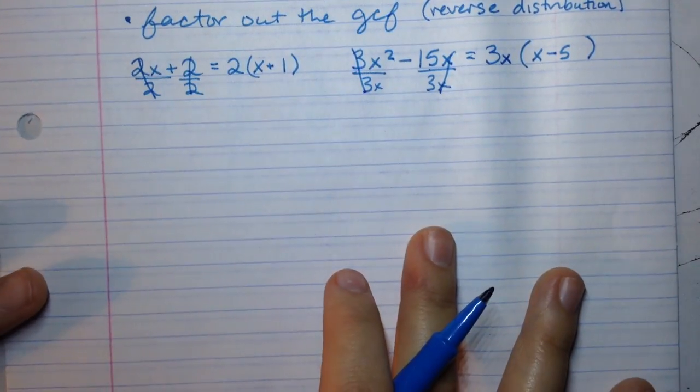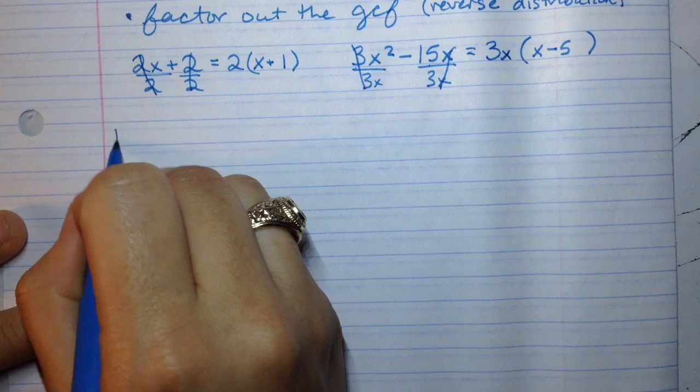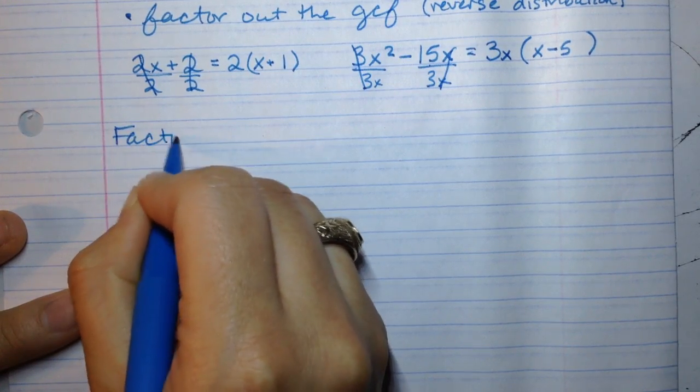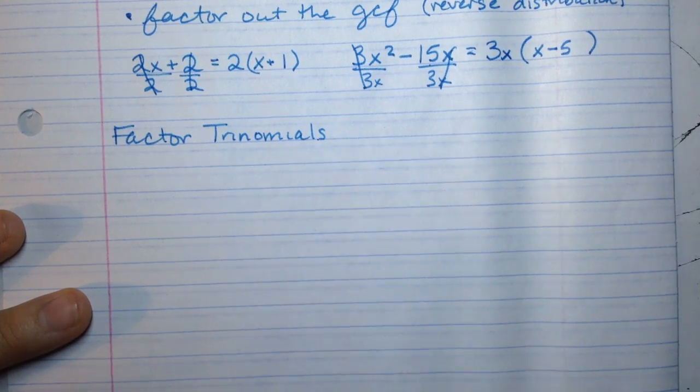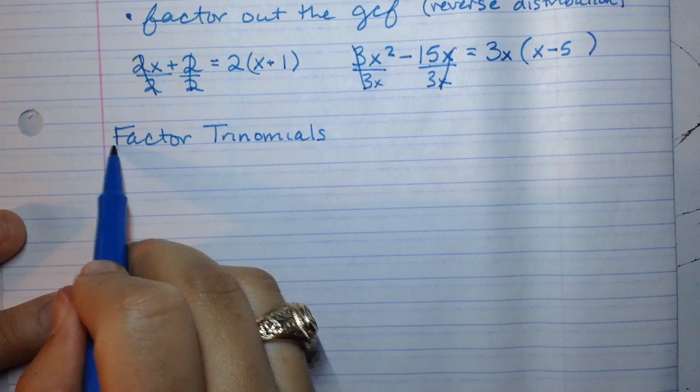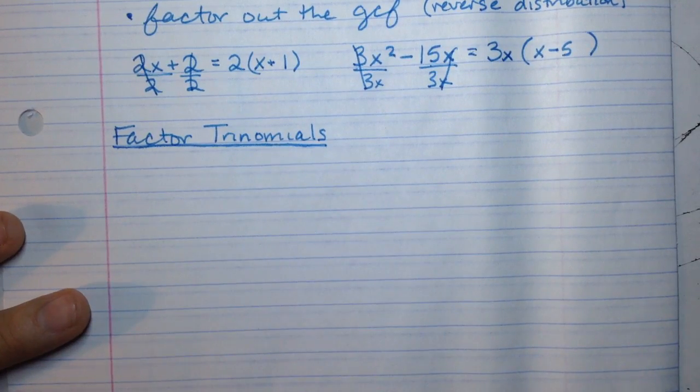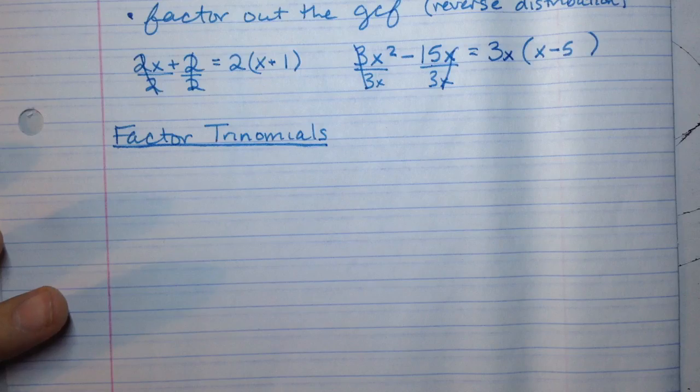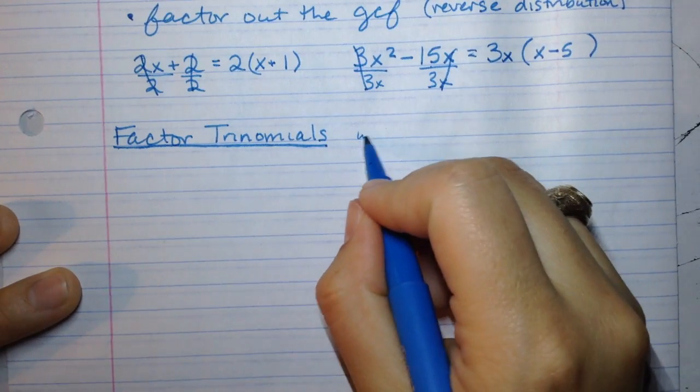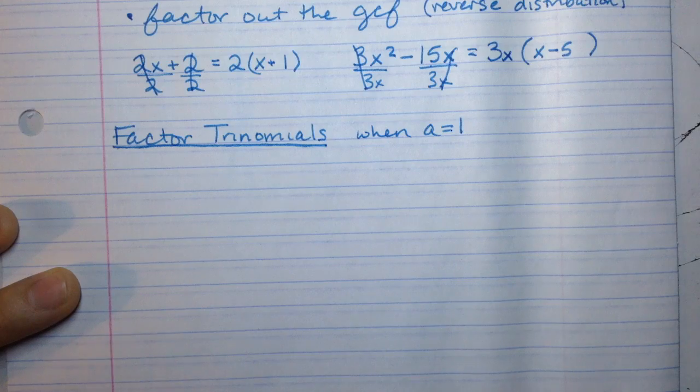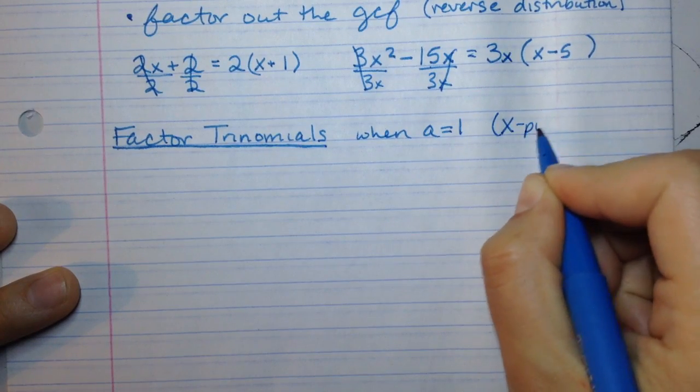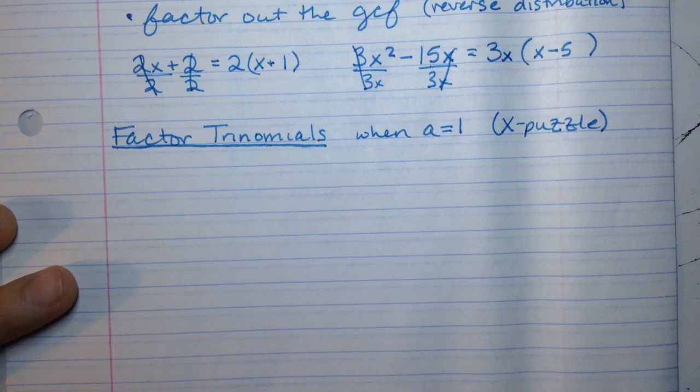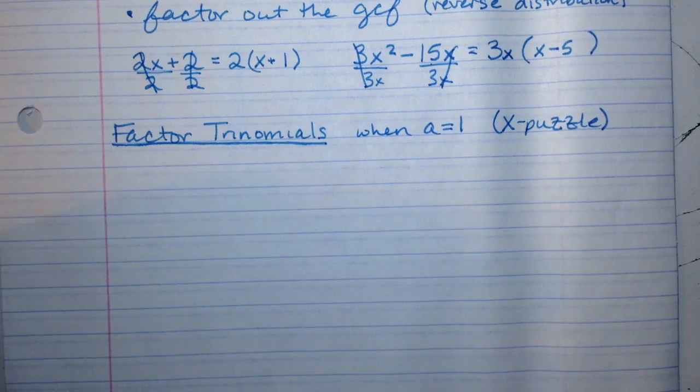The most important skill today that we're going to practice a lot is to factor trinomials. We've done this before, so it should look familiar. This is one of those fundamental skills that if you leave Algebra 1 without knowing how to do, you're going to be lost in Algebra 2. Now today we're only going to concentrate on when a is equal to 1. The next class we'll work on when a is not 1. And the way that we solve these is with one of those x puzzles.